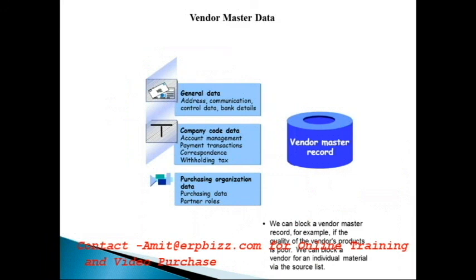The second master is the vendor master — simply the record for a particular supplier from whom we purchase material. In the vendor master, we enter communication details, address, bank details, control details, and transaction-related details like payment terms. For example, a vendor may require payment 30 days after delivery date. SAP has standard payment terms available, but you can also create custom payment terms as per your business needs.